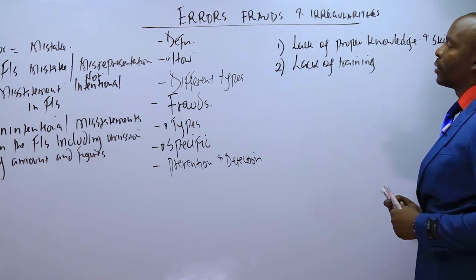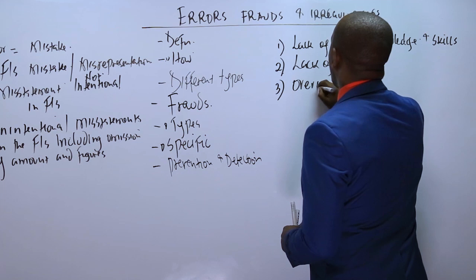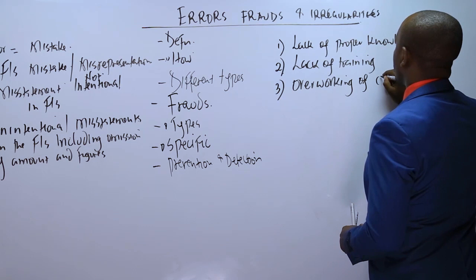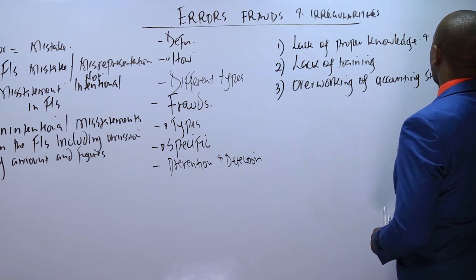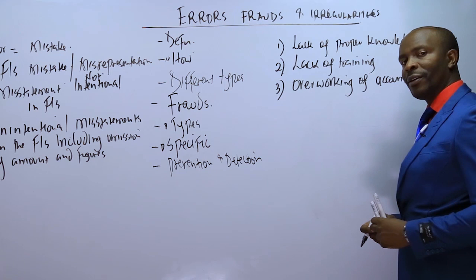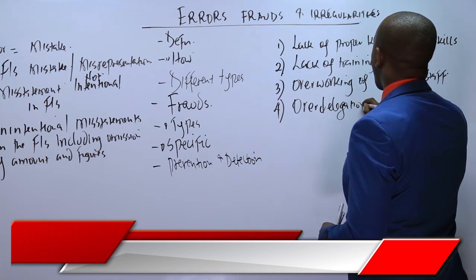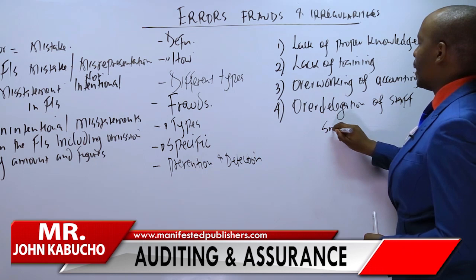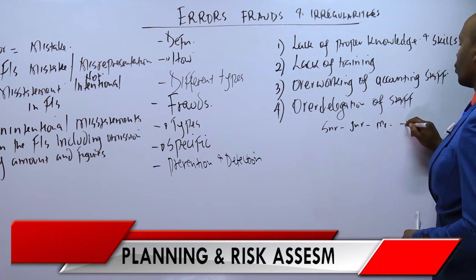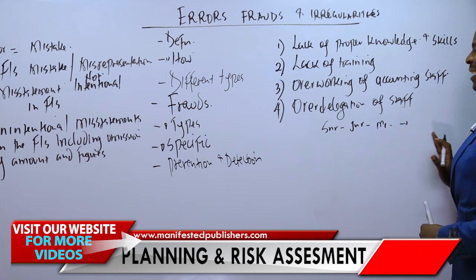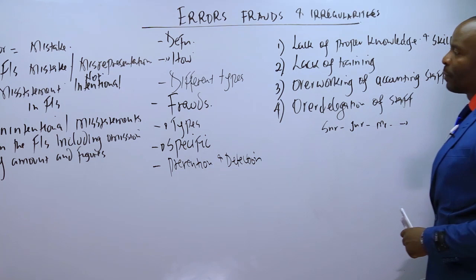If a person is not trained, we expect many errors because they'll be using trial and error. Number three: overworking of accounting staff. When you are overworked and feel tired and exhausted, there are many things you may overlook, and those introduce errors in the financial statement. Number four: overdelegation of staff — where a senior person delegates to a junior, who delegates to a more junior, and so on, until senior-level work ends up being done by the least experienced staff, resulting in many errors.